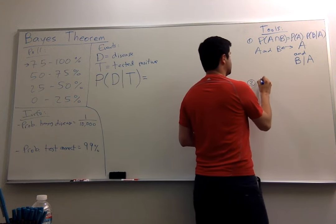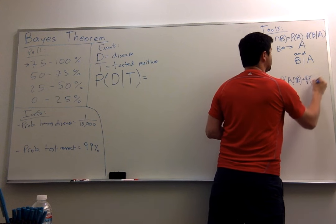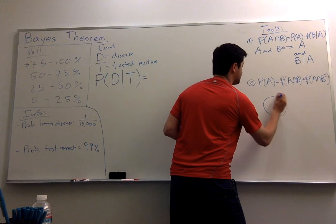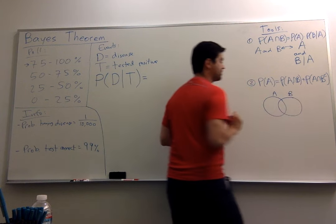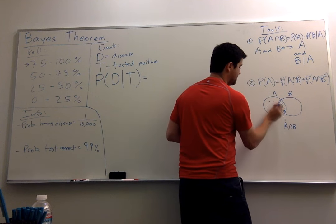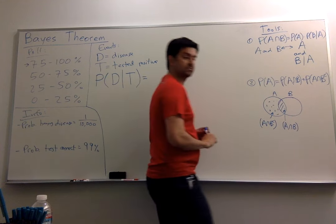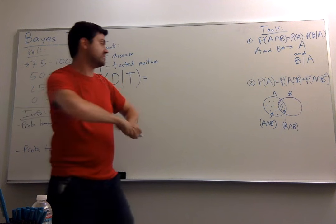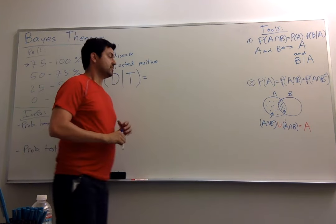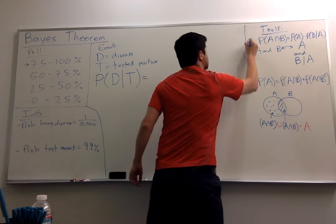Formula 2 says that the probability of A is equal to the probability of A intersection B plus the probability of A intersection B complement. This is easy to see graphically. If we have A as this event and we have B as this event, then this is A intersection B, and this is A intersection B complement. As you can see, they're disjoint, and their union is A. By the theorem that says that if two disjoint sets have a union equal to a third set, the probabilities add to the probability of the third event.